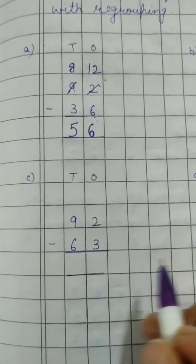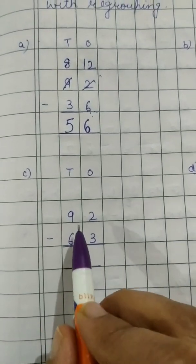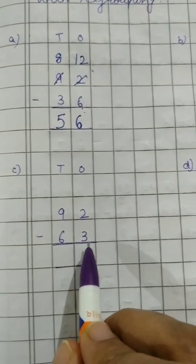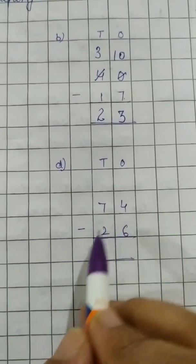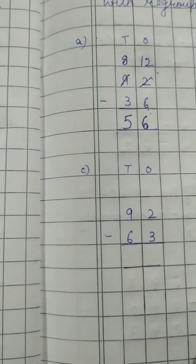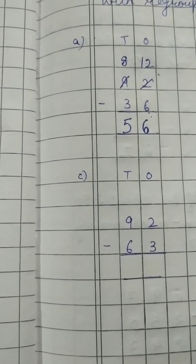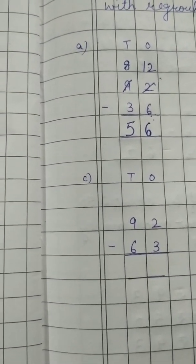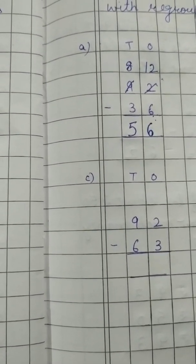C and D part, you have to do yourself. 92 minus 63. And D part, 74 minus 26. So children, whenever you practice for the subtraction sums, take only 2 digit numbers and do it with the grouping and regrouping. Practice hard.